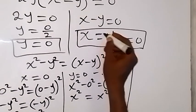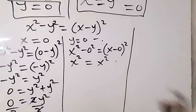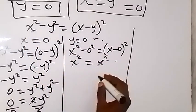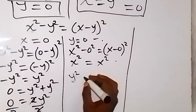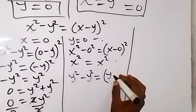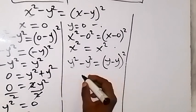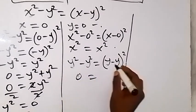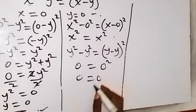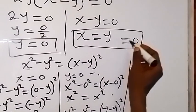Now let's test putting x = y — that is, replacing every x with y. The equation becomes y squared minus y squared equals (y minus y) squared. The left side is 0 and the right side is 0 squared, which is also 0. So we get 0 = 0, confirming that x = y is a valid solution.